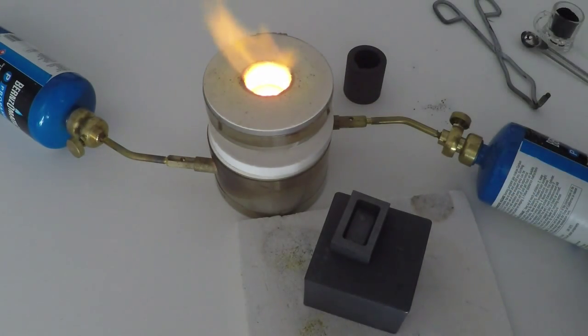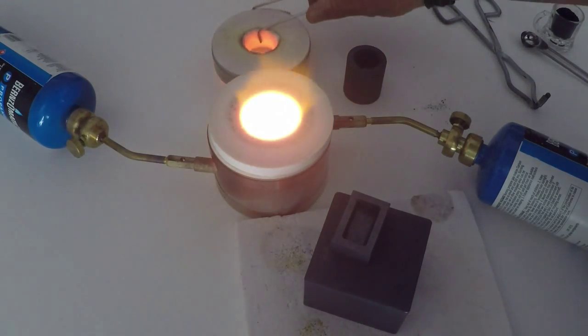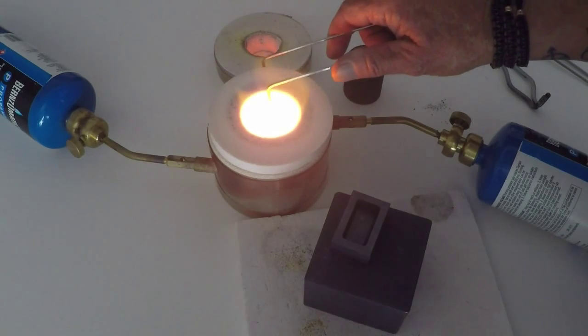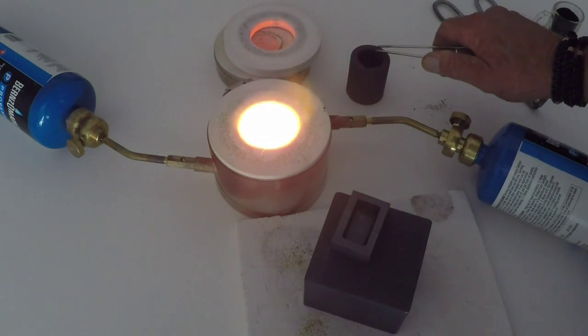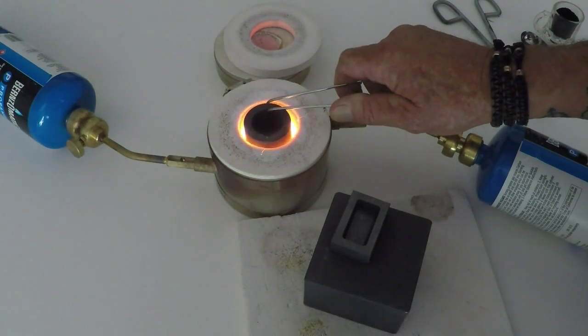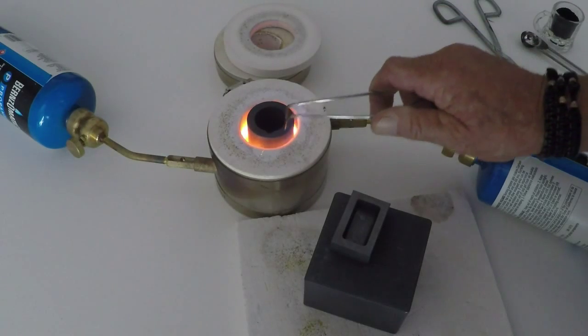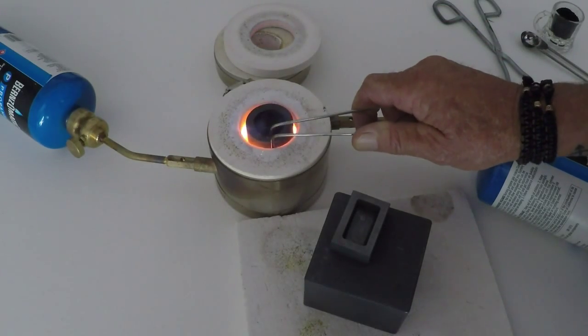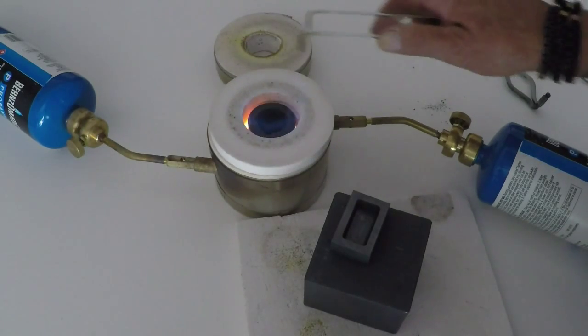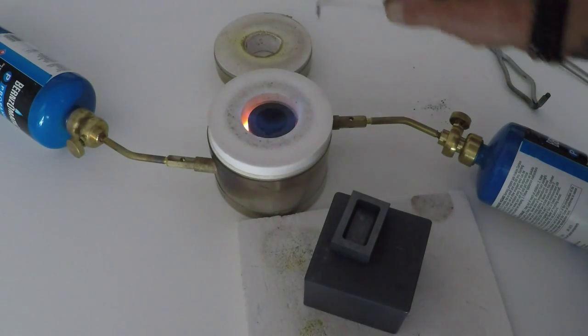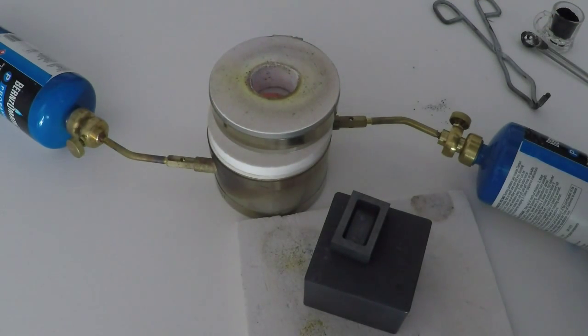We'll take our lid off and take our spacer off, and we're going to center our little crucible inside. Do as good a job as you can of getting it centered. That'll work. Put the spacer back on and we'll put the lid back on.